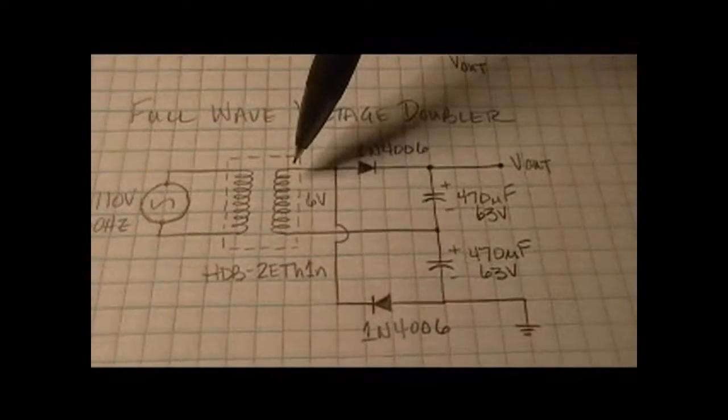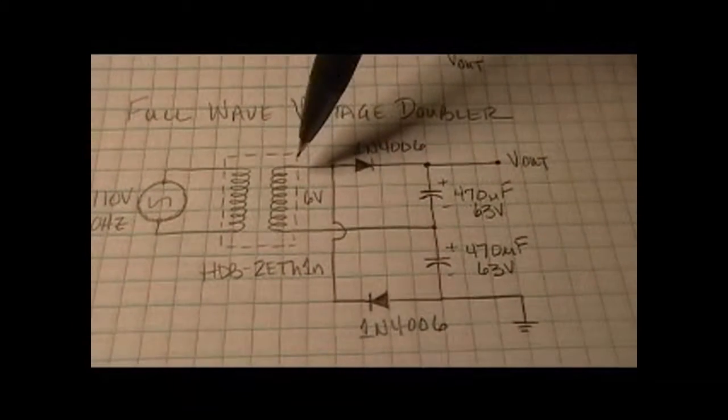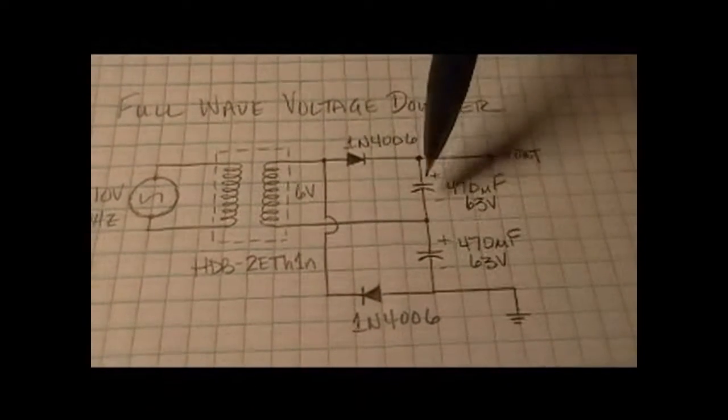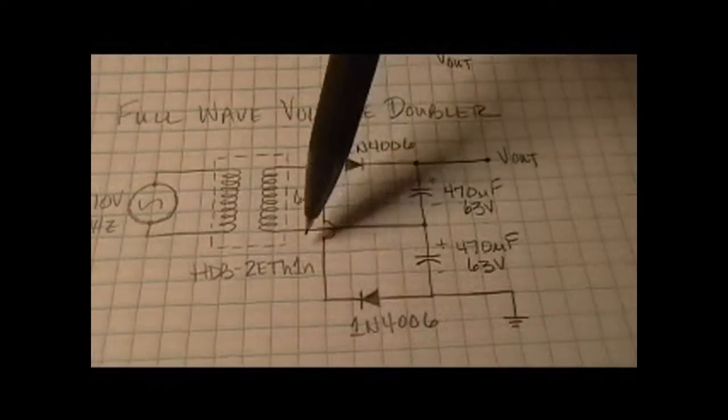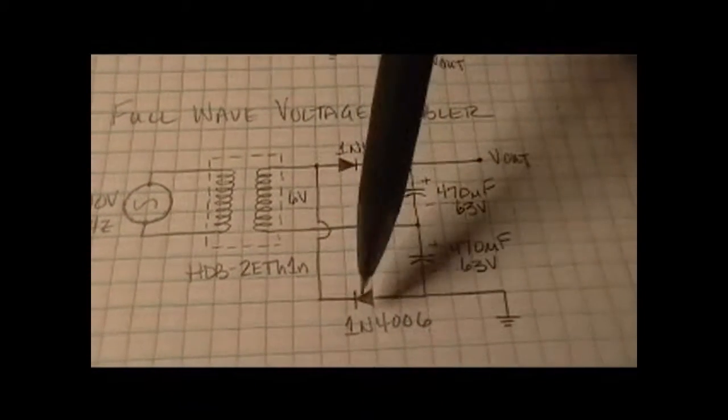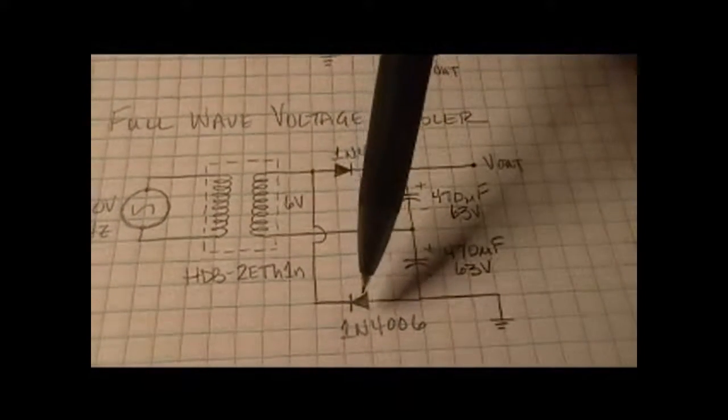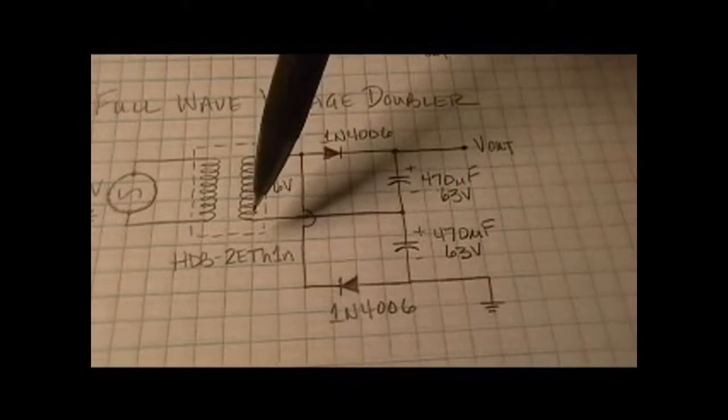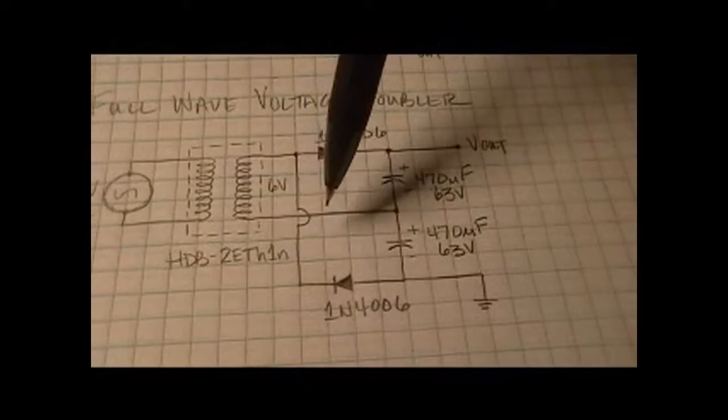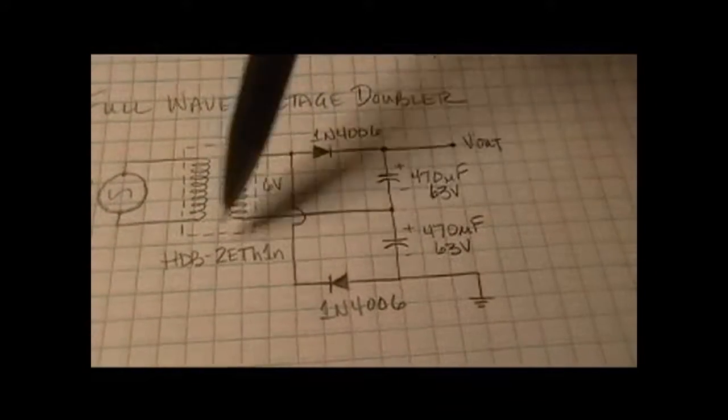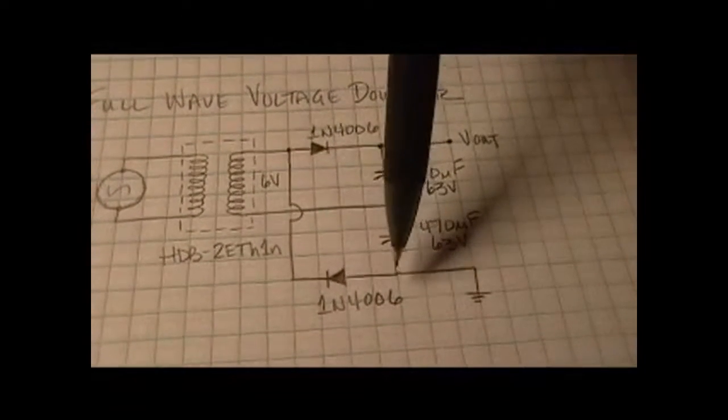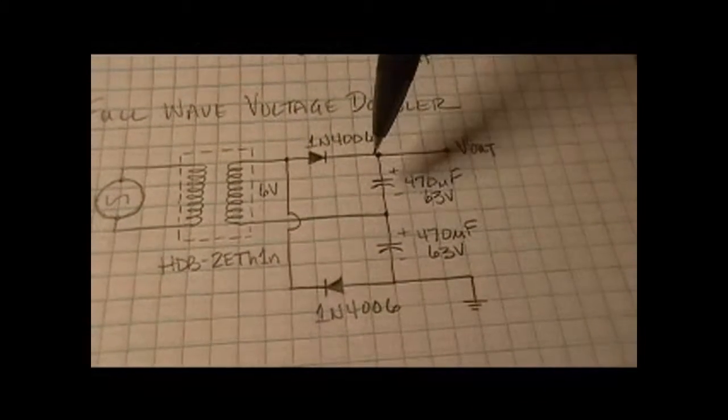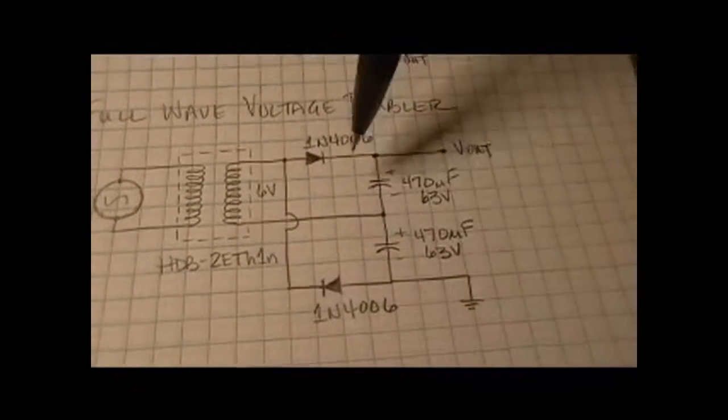So when this is the more positive side of the cycle, it's going to come through this diode, charge this cap and go back through the coil. This diode will actually be reverse biased and be off. When this is the more positive point, it's going to come through, come here, go through this cap, through this diode and back through the coil this way.